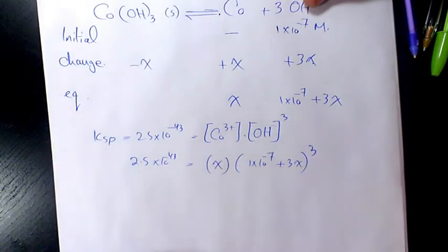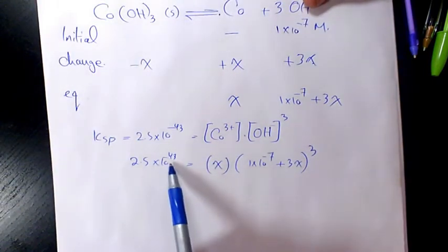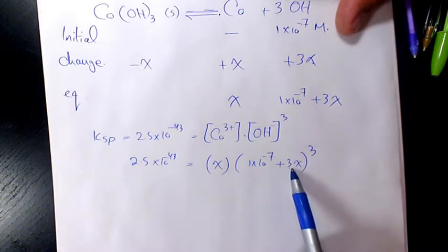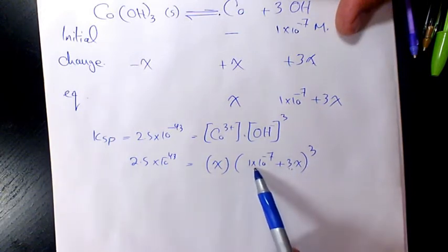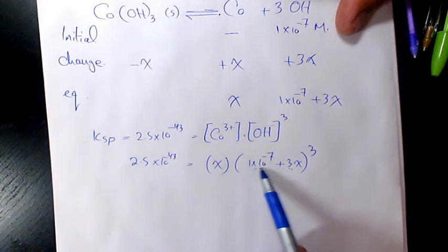Now in order to make it simplified, what we can do, because the Ksp value is very small, I can say 3x can be neglected comparing to 1×10⁻⁷.